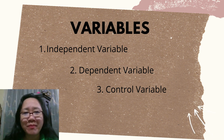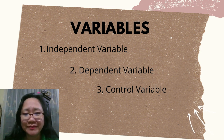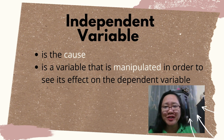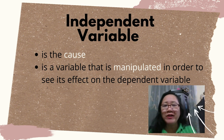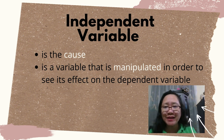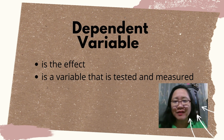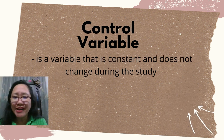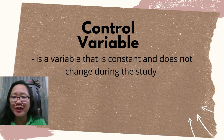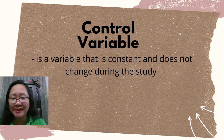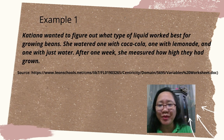Today, let's talk about independent variable, dependent variable, and control variable. Independent variable is the cause, or a variable that is manipulated in order to see its effect on the dependent variable. Dependent variable is the effect, or the variable that is tested and measured. On the other hand, control variable is a variable that is constant and does not change during the study.